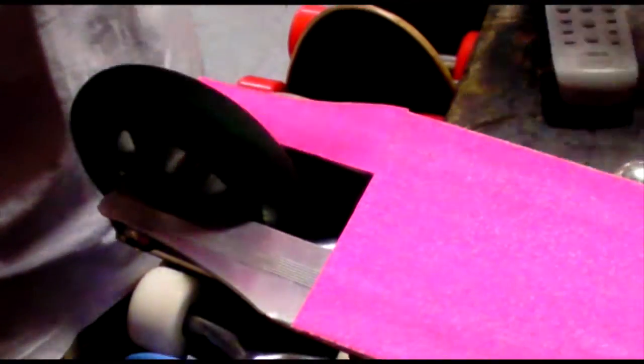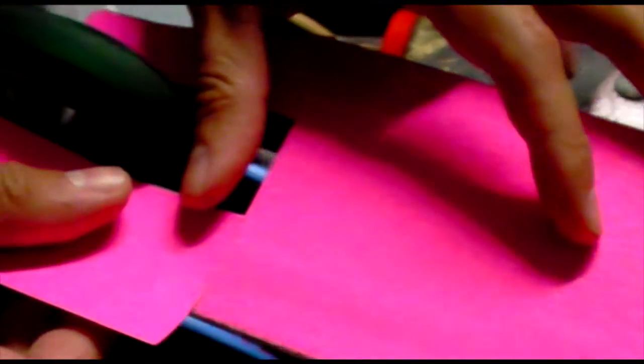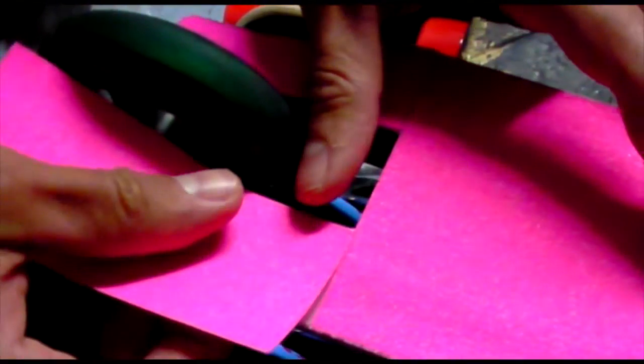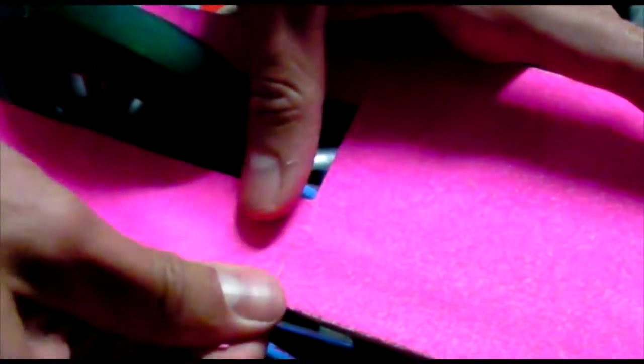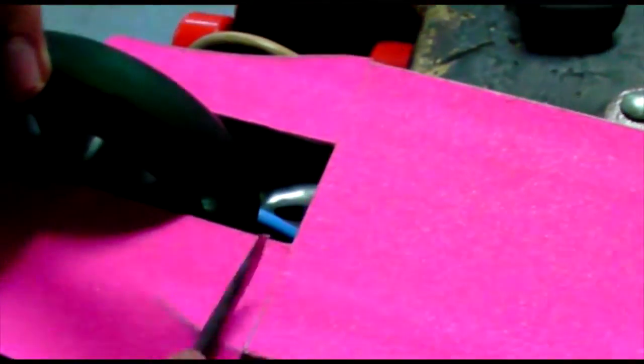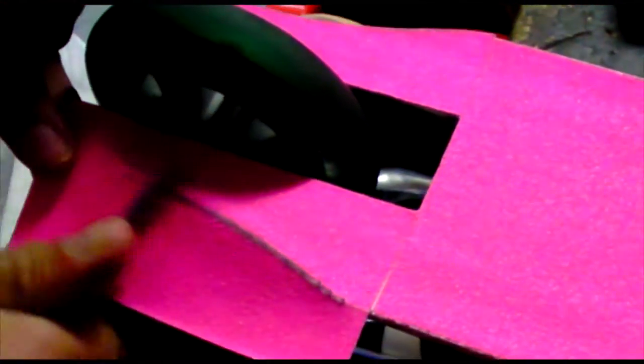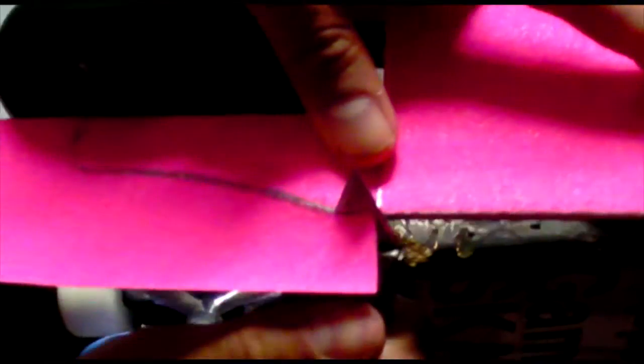And then the other side, once again, that nice straight line. Line it up against the grip tape you put on before and the line of the brake. Lay it down flat. Once again sanding around the edge. And a nice clean cut.